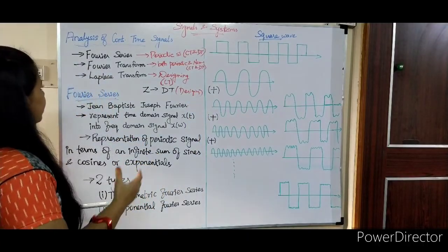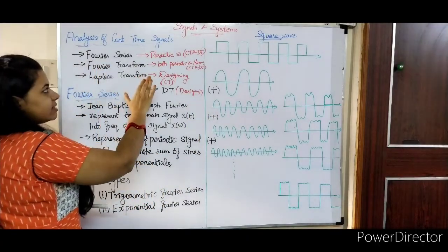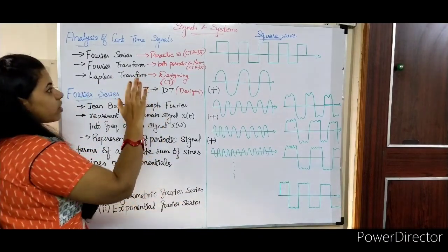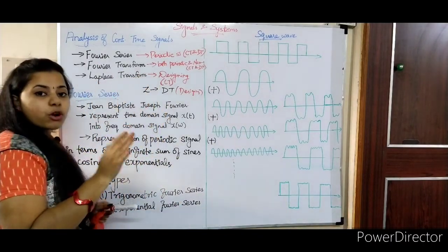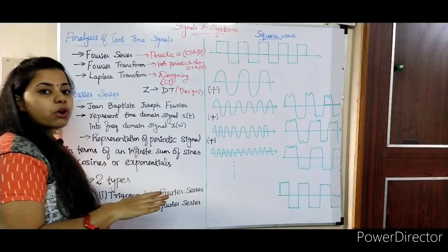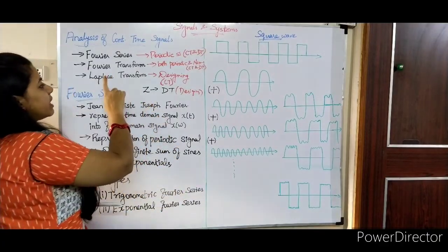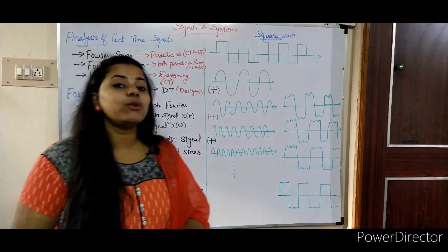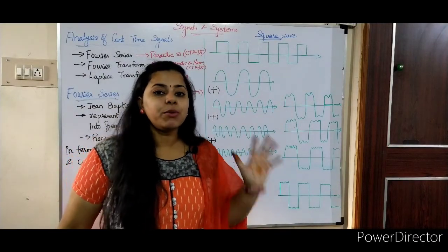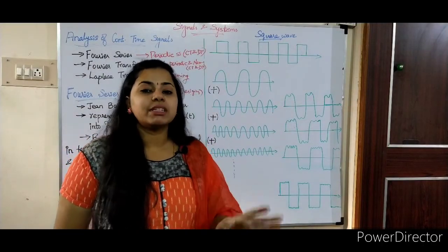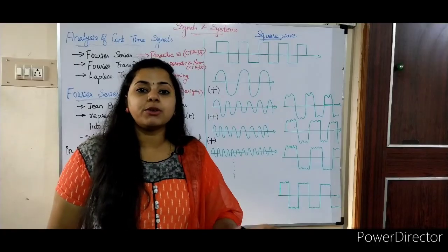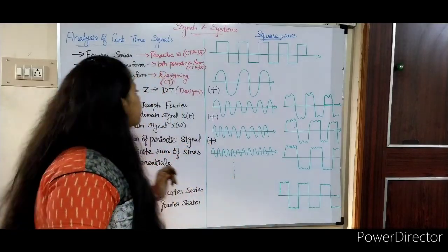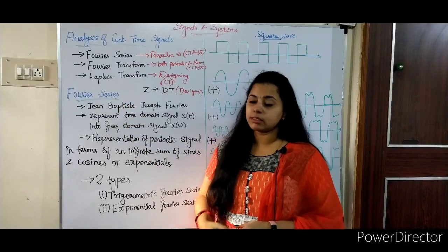To recap: Fourier series can only analyze periodic signals. For analyzing non-periodic signals, you have to go for Fourier transform. Laplace transform is used only to analyze continuous time signals. Likewise, Z transform is used only for discrete time signals.